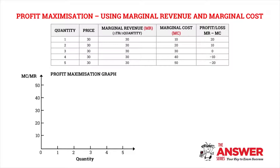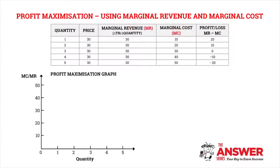We're going to kick off today's lesson with the aid of a marginal revenue and marginal cost table, so let's start off by recapping our definitions. Marginal revenue refers to the additional income earned when an additional unit is sold. Marginal cost refers to the increase in total cost when an additional unit is produced. Profit refers to a situation where your marginal revenue exceeds your marginal costs, and a loss is incurred when your marginal costs exceed your marginal revenue.